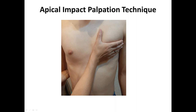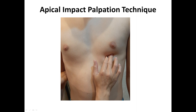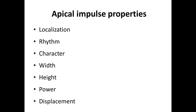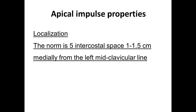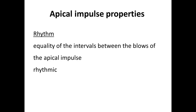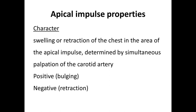Here I demonstrate how to perform apical impulse palpation: place the hypothenar on the third to fifth intercostal space, with fingers on the left side of the sternum, and feel the beating. If you find the beating at the fifth intercostal space, place your second and third fingers and give characteristics. Assess the localization, rhythm, character, width, height, power, and displacement of the apical impulse. Normal localization of the apical impulse is the fifth intercostal space, 1 to 1.5 centimeters medially from the left midclavicular line. Rhythm should normally be rhythmic.